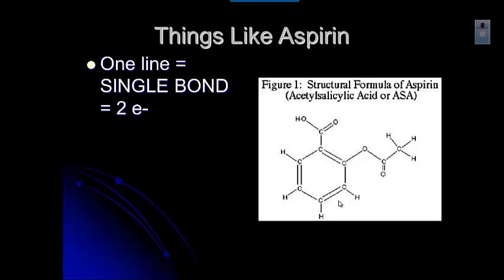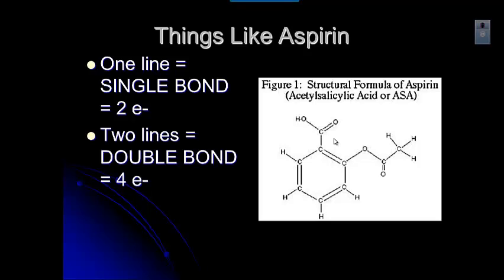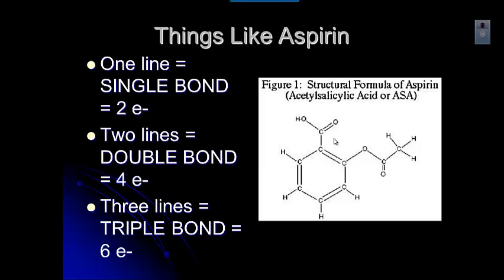Every molecule has a certain number of atoms. When we give the formula for a covalent compound, there are actually nine carbons, eight hydrogens, and four oxygens. If you have one line between atoms, like between carbon and oxygen, that's one single bond — a shared pair, so two electrons. If you have a double bond — two lines — that's four electrons. In some cases, you can even have a triple bond: three lines between the atoms, which would be six electrons.